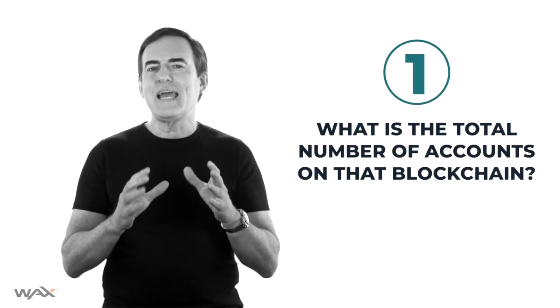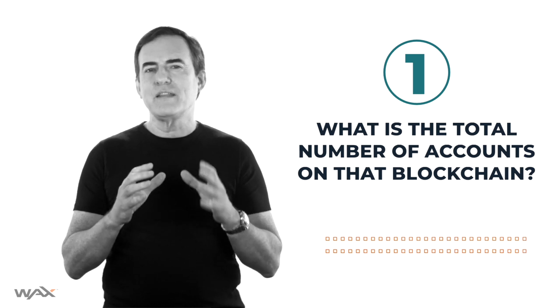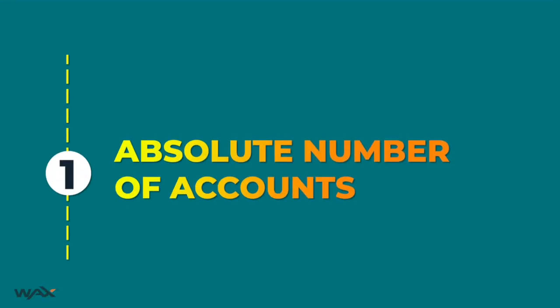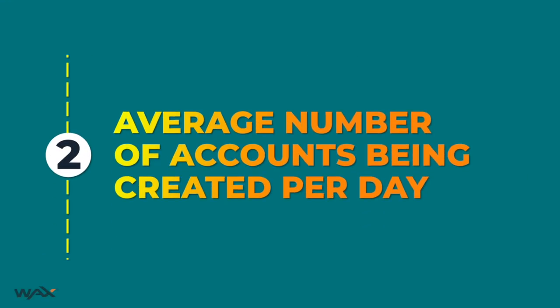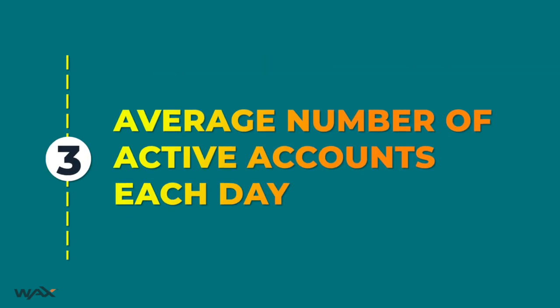We can filter out a lot of junk tokens that have no chance of ever being adopted by doing a simple inspection of their on-chain metrics — things like whether anyone is adopting the token, how people are using it, and whether usage is going up or down. The first useful metric is the number of accounts on that blockchain. You can easily find this on the block explorer for that token. Pay attention to the absolute number of accounts and the average number being created per day.